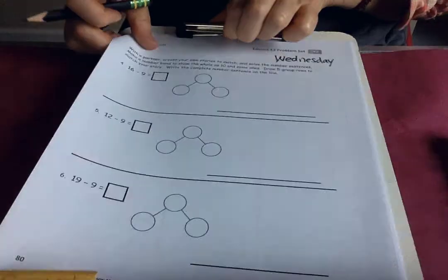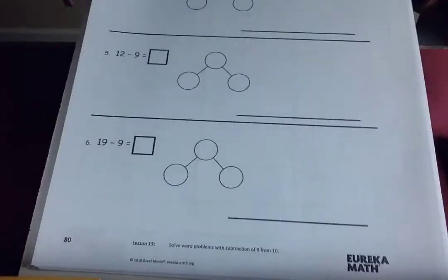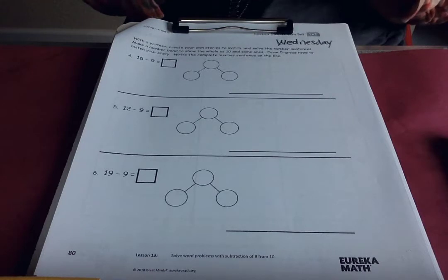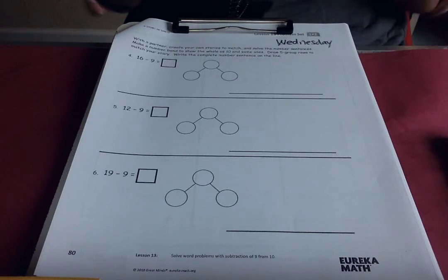Okay, here are more problems about taking away nine, subtracting nine. Remember last time we were doing addition and we were moving some over to make ten. And now we're doing some subtraction and it still could be moving, thinking of it in terms of ten.